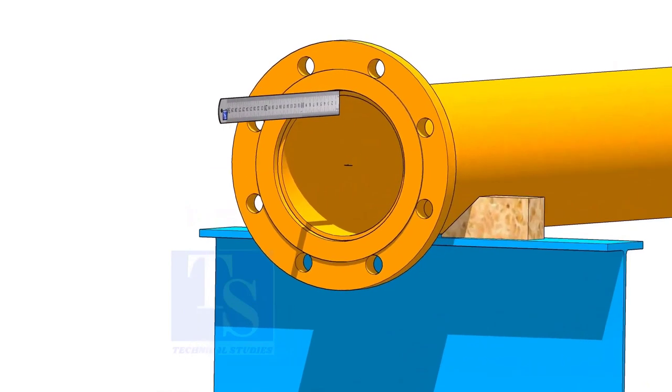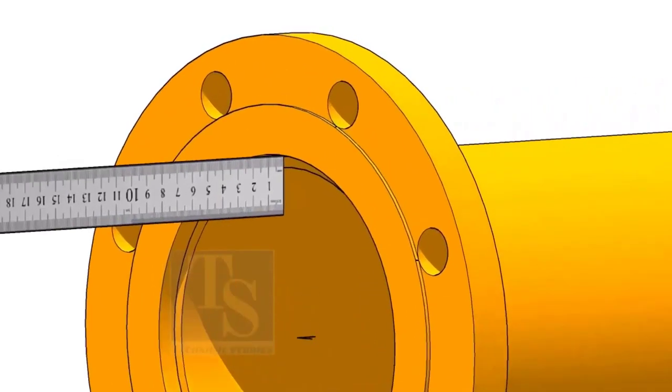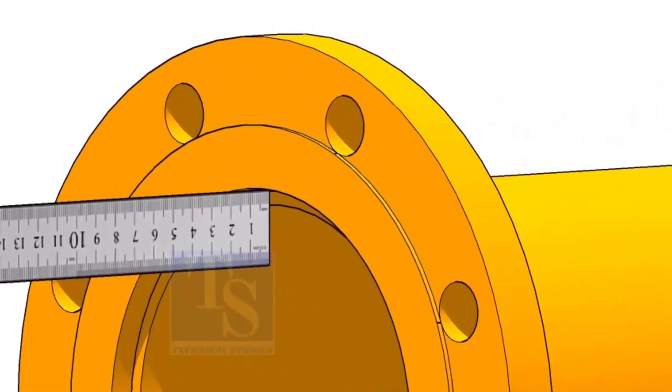The pipe face to the flange face, the clearance shall be the minimum thickness of the pipe. Assume that the thickness of the pipe is 6 millimeters. The clearance shall be a minimum of 6 millimeters.